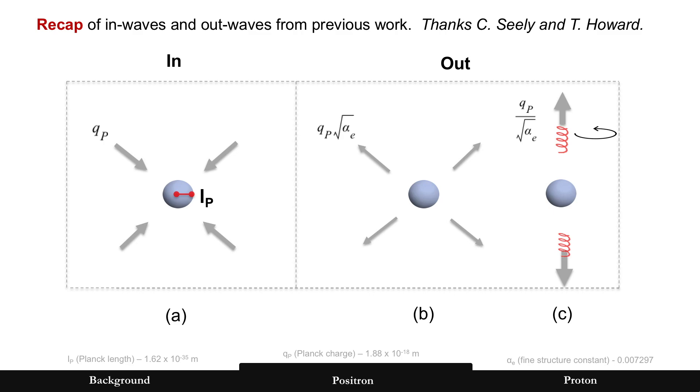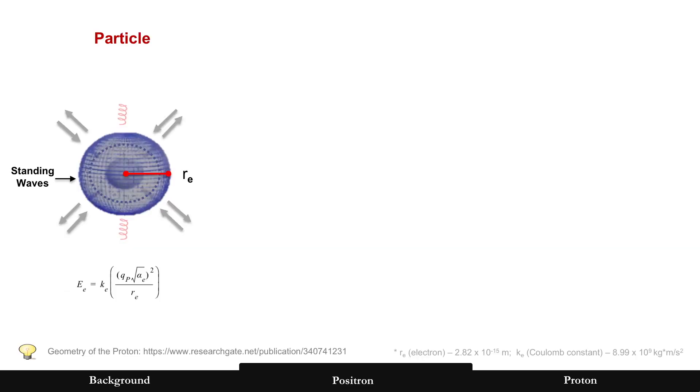So we're going to explain this with waves. And this is going to be a recap of in-waves and out-waves from previous work. I'm going to go through this quickly, but there'll be a reference URL if you need more details. We're going to add on a layer here. And thanks to Chris Seeley and Terence Howard, because it's now computer simulated. Planck length and fine structure constant, you see there. And the information, if anyone wants to follow along the math, there's the URL in the description.